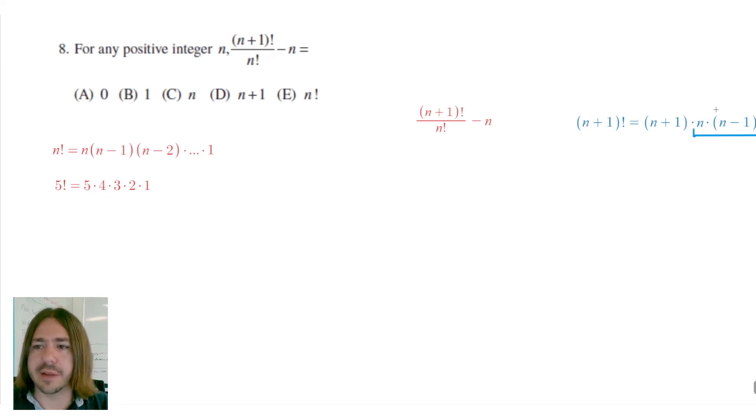This is n times the number before that times the number before that. So what we can say then is that (n+1)! is actually equal to (n+1) times all this, which is just simply n!. And once you rewrite it like that, everything is going to simplify really quickly and work out really nicely.